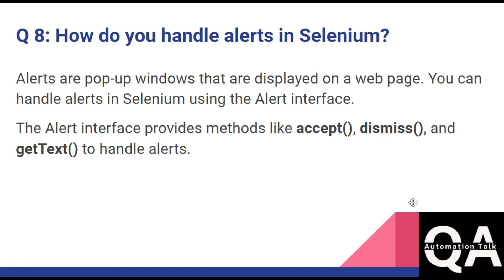The next question is: how do you handle alerts in Selenium? An alert is a pop-up window displayed on the web page. In Selenium, you handle alerts using the Alert interface. It has methods: accept(), which accepts the alert; dismiss(), which dismisses the alert; and getText(), which gets the text of the alert. That's how you handle alerts in Selenium.